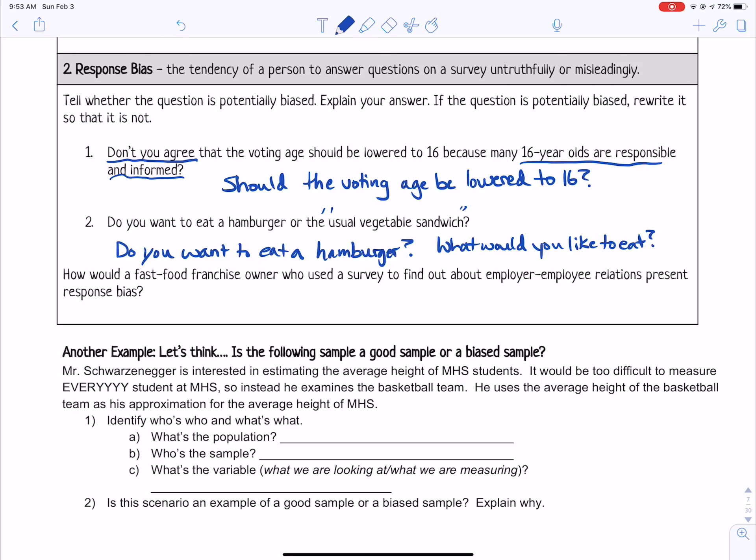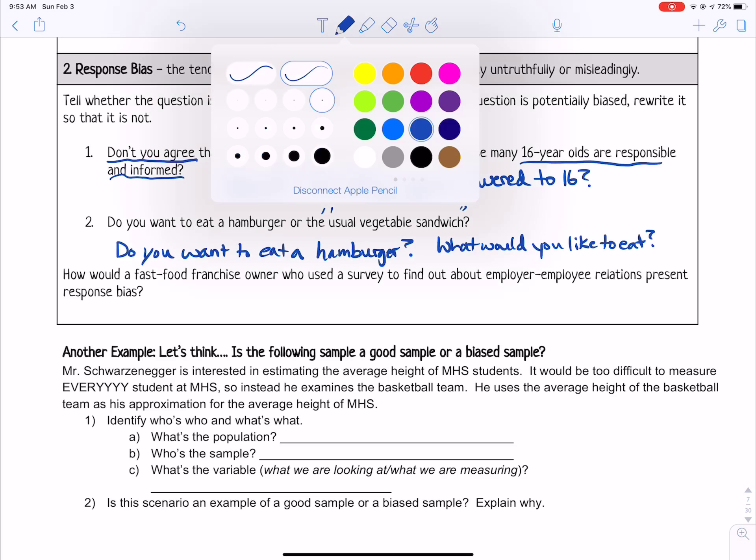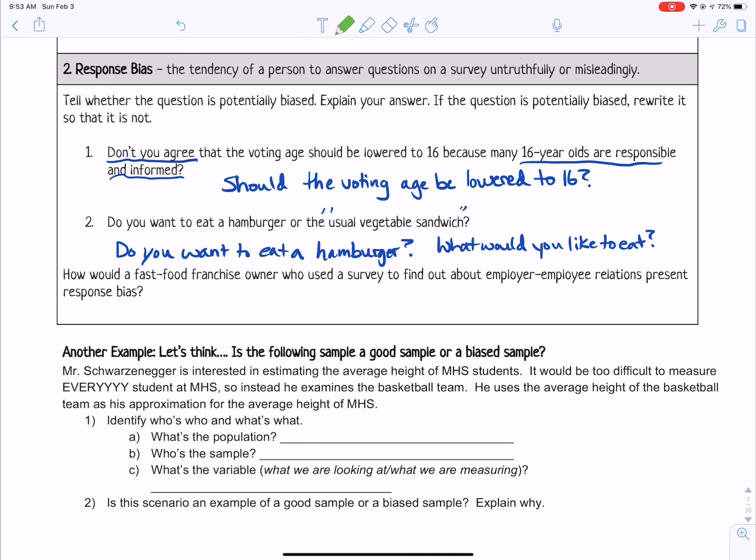And then it says, how would a fast food franchise owner who used a survey to find out about employer-employee relations present response bias? So some of you might have had this happen where your boss asked you to fill out a survey about how well they're doing and how well they're treating you. And you didn't feel like you could be honest with them.